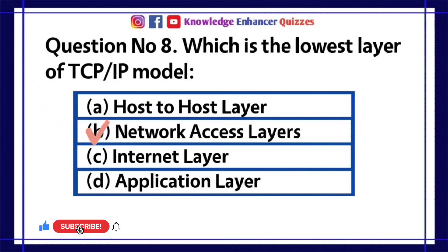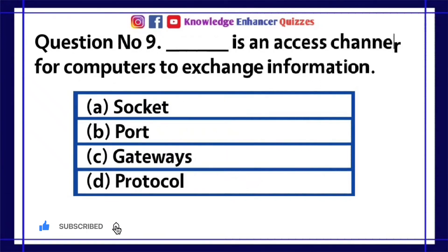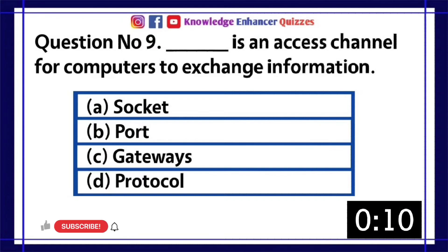Option B is the right answer. Question number 9: What is an access channel for computers to exchange information? A. Socket. B. Port. C. Gateways. D. Protocol.